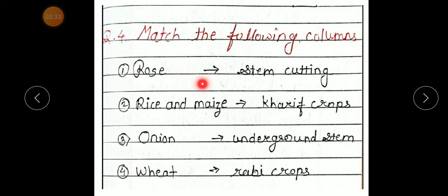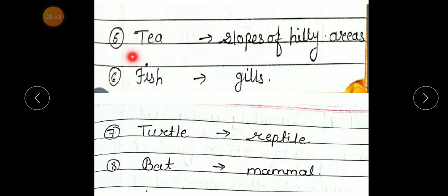First, rose, answer stem cutting. Number 2, rice and maize, kharif crops. Number 3, onion, underground stem. Number 4, wheat, rabi crops. Number 5, tea, slopes of hilly areas.